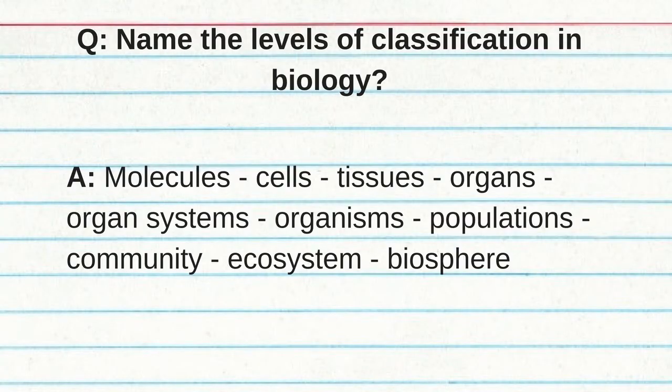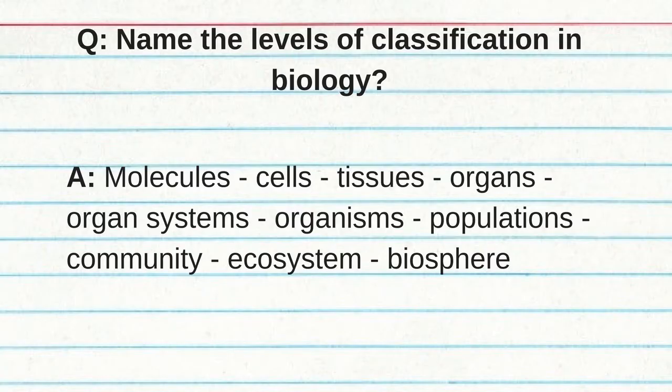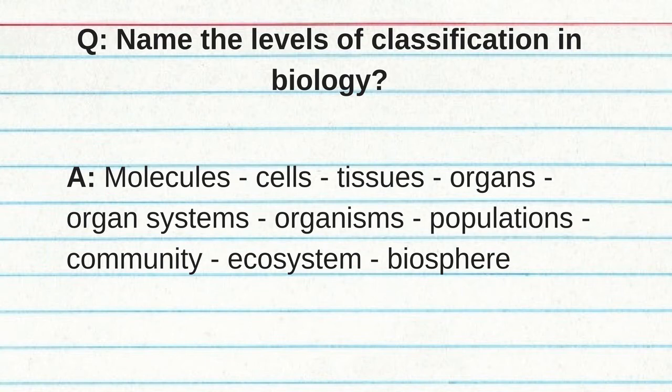Name the levels of classification in biology from largest to smallest: molecules, cells, tissues, organs, organ systems, organisms, population, community, ecosystem, and biosphere.